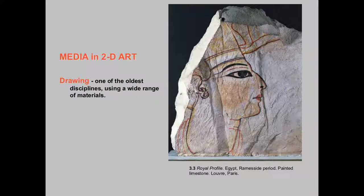Drawing goes way back — 20,000 to 30,000 years ago. They keep finding cave drawings, which are amazing. This is an Egyptian drawing, probably 5,000 or 6,000 years old. It's one of the oldest disciplines, with so many different materials and cultures that evolved separately and then came together. This is painted limestone — not a true fresco — probably from inside a tomb, and now it's in the Louvre Paris.